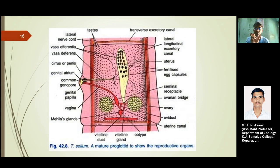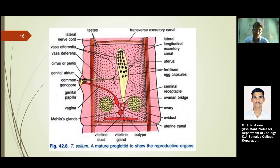Below the ovarian bridge, from the common gonadopore or genital atrium, the tube-like passage is the vagina, which opens into the seminal receptacle — the bulb-like structure continuous with the vagina. This then meets the oviduct and uterine canal, with the ootype forming the junction of all these structures at its base.